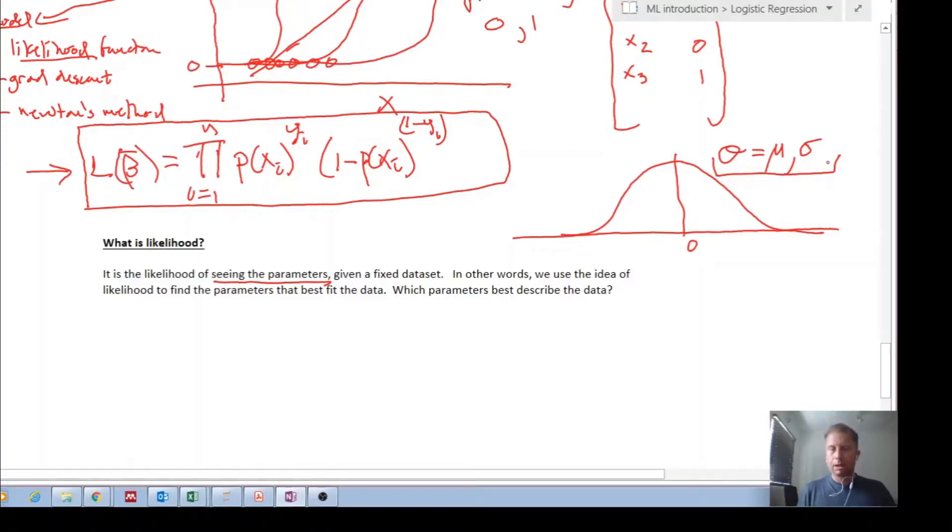You know the parameters, and now you're trying to sample within that parameter distribution, or that distribution described by those parameters. That is what probability is.